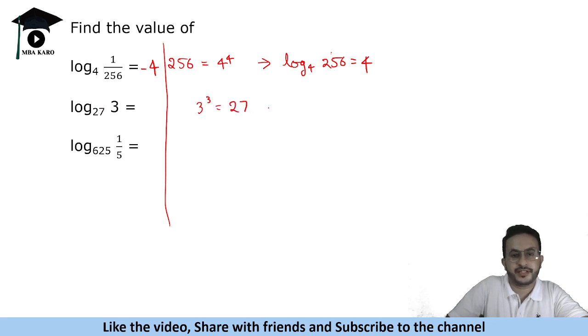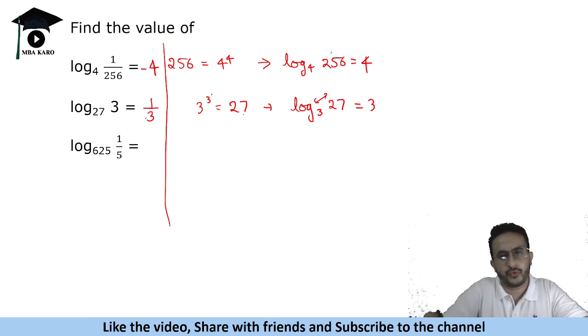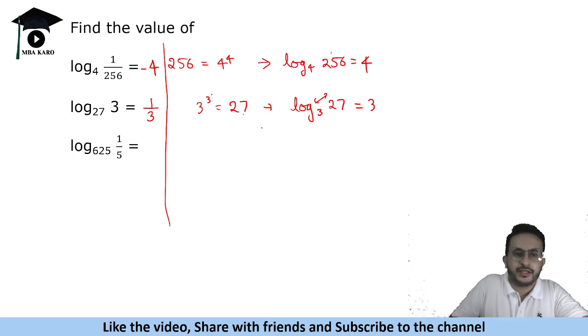Now log₃27. We know 3 raised to the power 3 is 27. It implies log₃27 will be equal to 3. This is power, so the exponent comes here and this is your argument that is put here. Now log₃27 is 3. If we switch these two, we will get the reciprocal, 1 by 3.